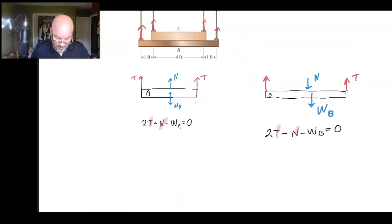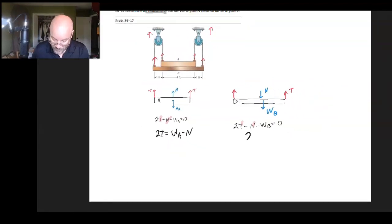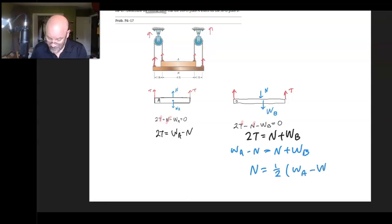So here's what I'm going to do, I'm going to say that 2T is WA minus N, and over here, I'm going to say that 2T is N plus WB. I can set those equal to each other, and then we're going to have WA minus N is N plus WB. Then we just do a little bit of algebra, and what we're going to discover is that it's going to be half of WA minus WB. So it's half the difference in the weight, which is kind of a cool result.